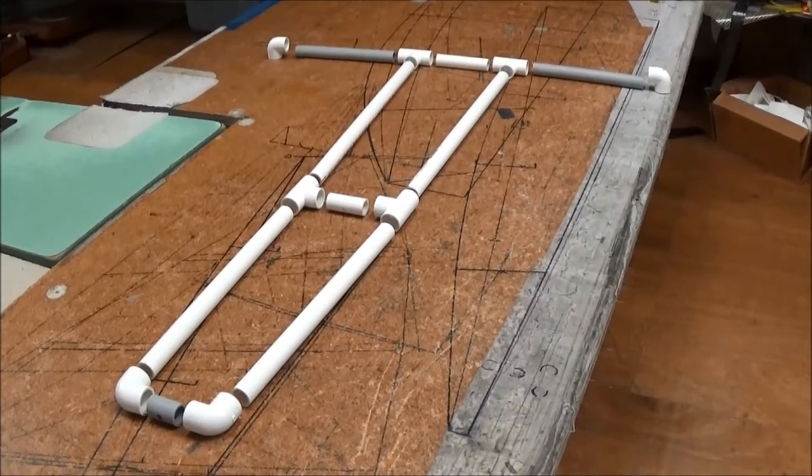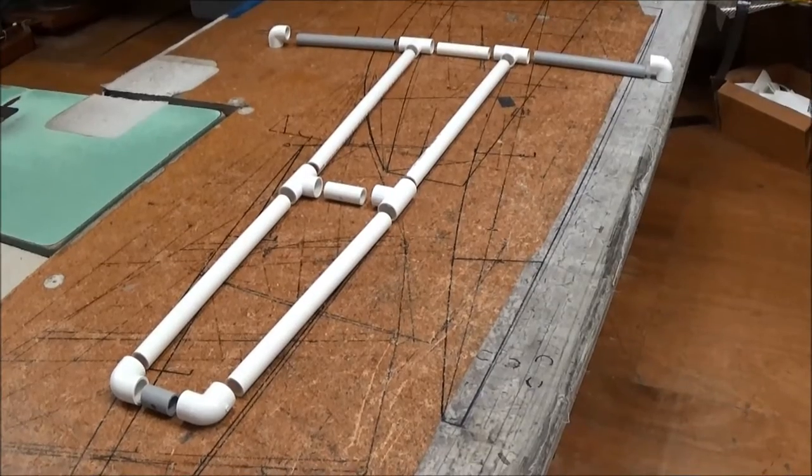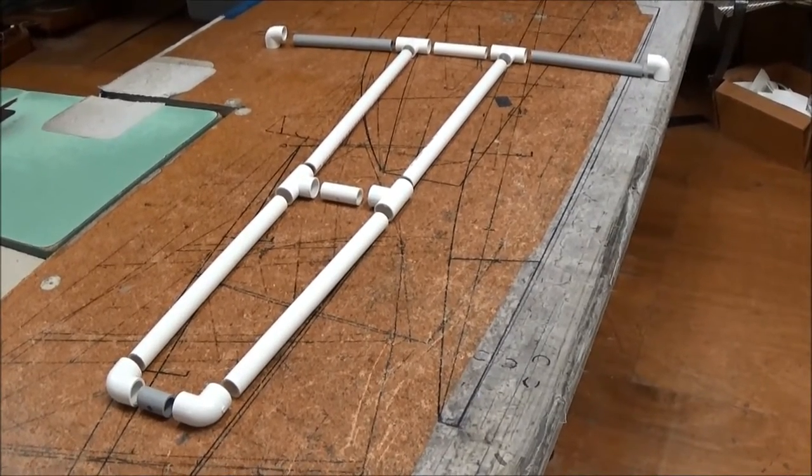This is the PVC land sail laid out. Three-quarter inch PVC pipe. The gray is UV resistant, which doesn't matter, white or gray works.